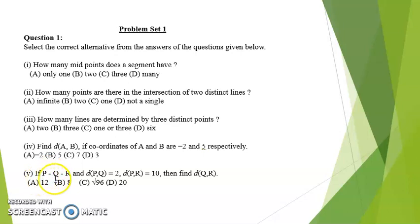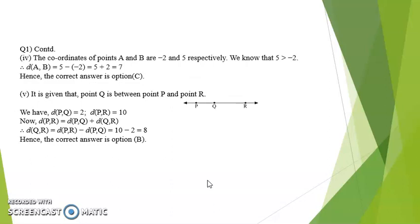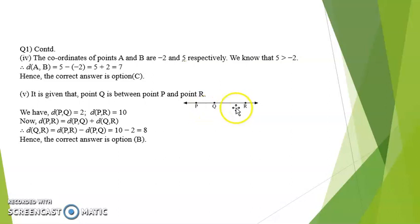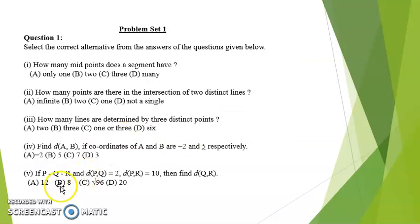Next, if P, Q, R and distance PQ is 2, distance PR is 10, then find QR. QR would be PR minus PQ, that is 10 minus 2. Answer is 8. That is option B.